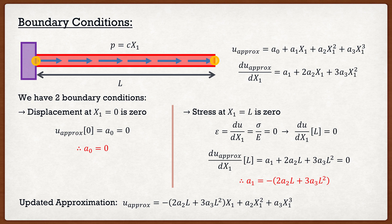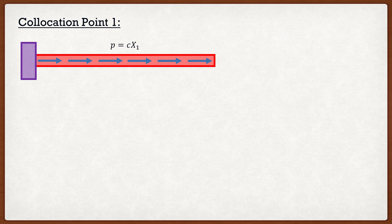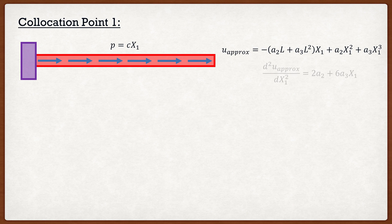After applying the boundary conditions, our updated approximation looks better but we still have unknowns, namely a2 and a3. That's where the collocation method comes in. I'm going to take the second derivative of our updated approximation function, which gives me 2*a2 plus 6*a3 times x1.